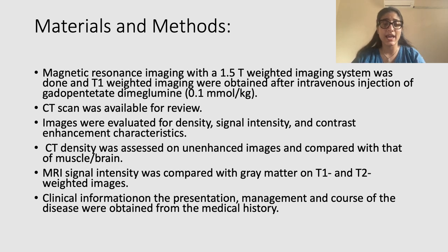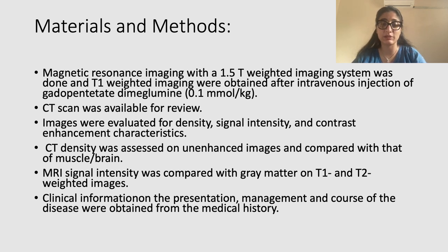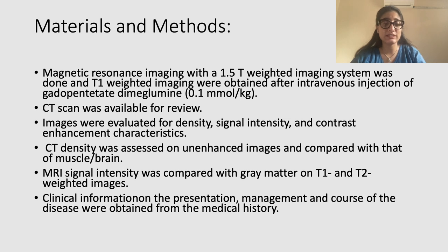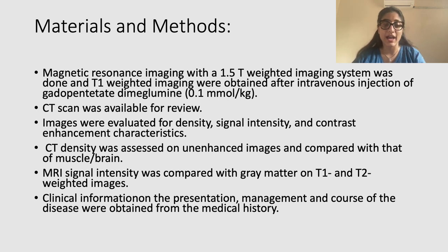Materials and methods: MRI imaging with 1.5 Tesla weighted imaging system was done, and T1 weighted images were obtained after IV injection of gadolinium contrast at 0.1 millimole per kg. CT scan was available for review. Images were evaluated for density, signal intensity, and contrast enhancement characteristics. CT density was assessed on unenhanced images and compared with that of muscle and brain. MRI signal intensity was compared with gray matter on T1 and T2 weighted images. Clinical information, the presentation, management, and the clinical history was obtained from the patient.